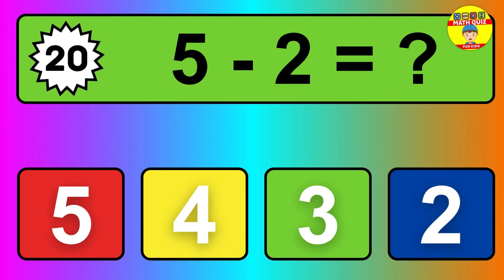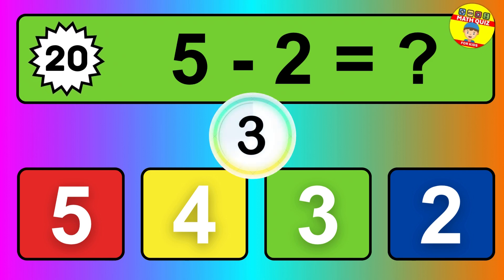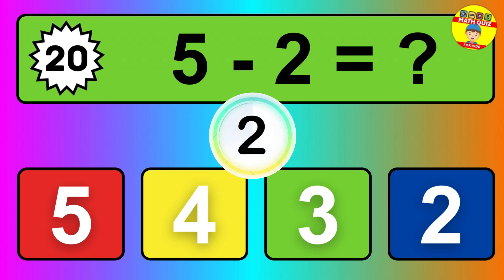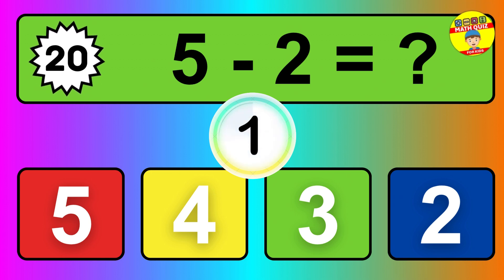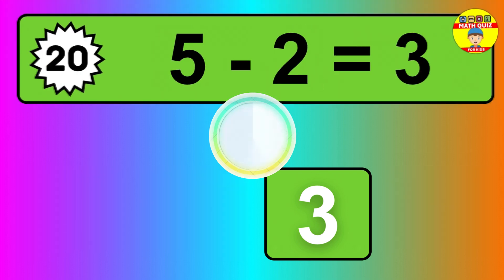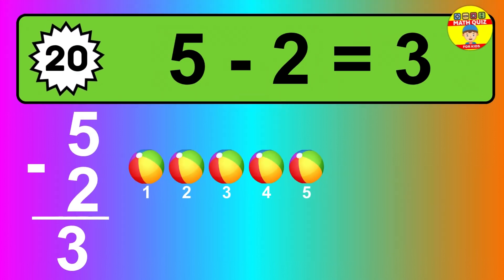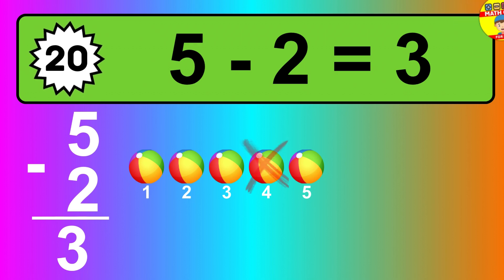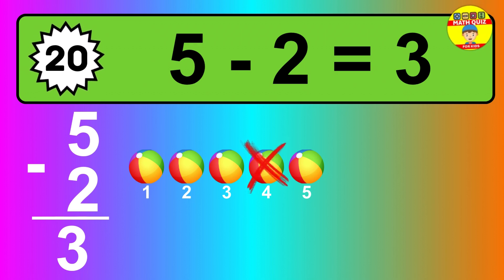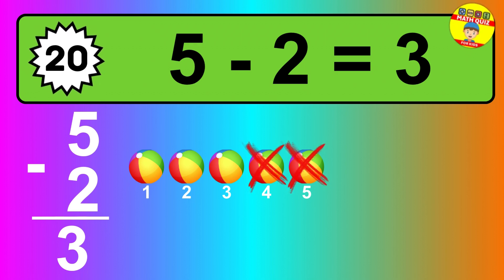Question 20. 5 minus 2 equals what? So the answer is 5 minus 2 is 3. Let's count it. 1, 2, 3.